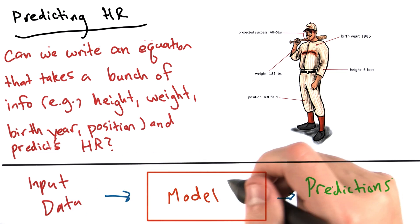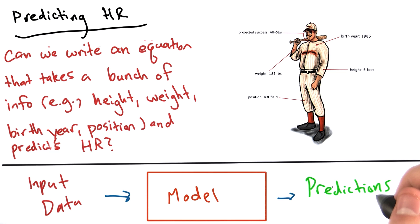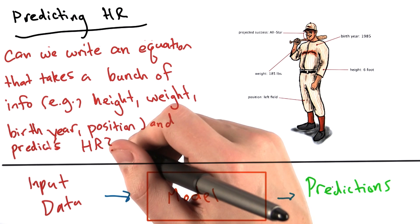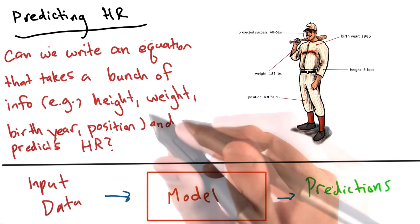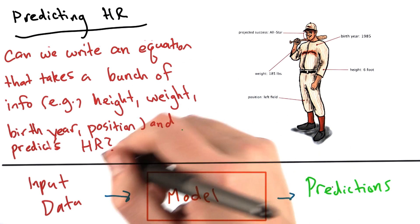We can then use this equation to predict the lifetime number of home runs for players for whom we do not initially have number of home runs, but we do have all the other data. So their height, and weight, and birth year, and position maybe.